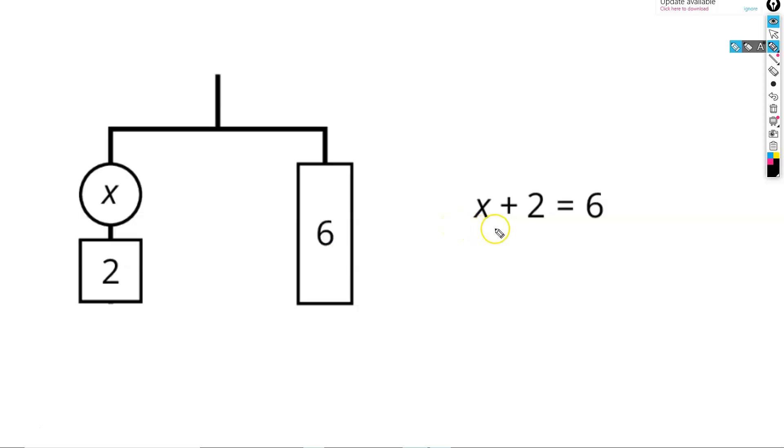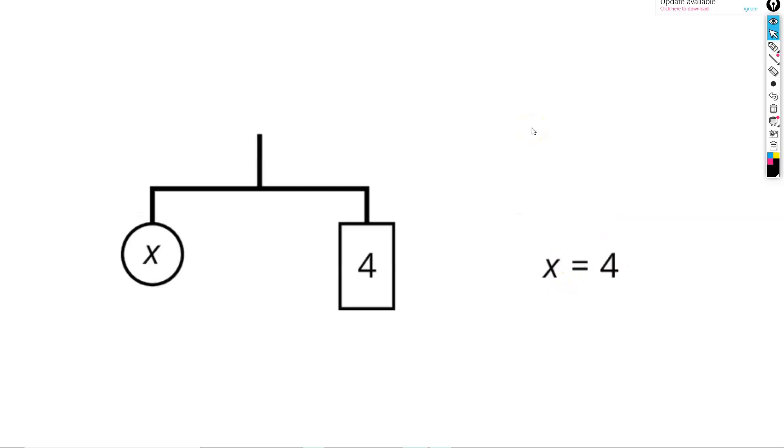To get x alone, all we have to do is subtract 2 from our left side, and to keep it balanced, also subtract 2 from our right side. This leaves us with a balanced hanger with x on the left and 4 on the right for the equation x equals 4.